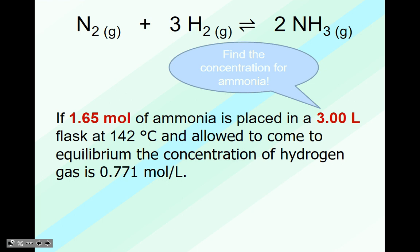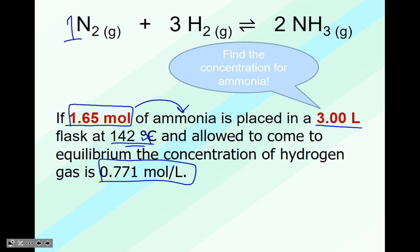Here's another example. We have nitrogen gas plus hydrogen gas produces ammonia. Let's write down and balance our equation — if there's no coefficient, it's a coefficient of 1. If 1.65 moles of ammonia is placed in a 3-liter flask at 142 degrees Celsius and allowed to come to equilibrium, the concentration of the hydrogen gas is 0.771 moles per liter. We have the information to find concentration: C equals n over V.